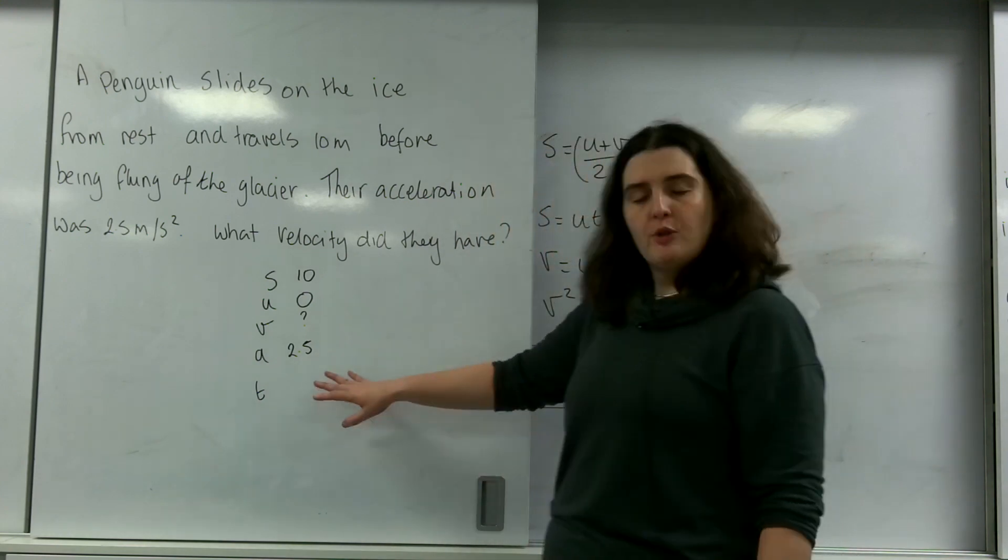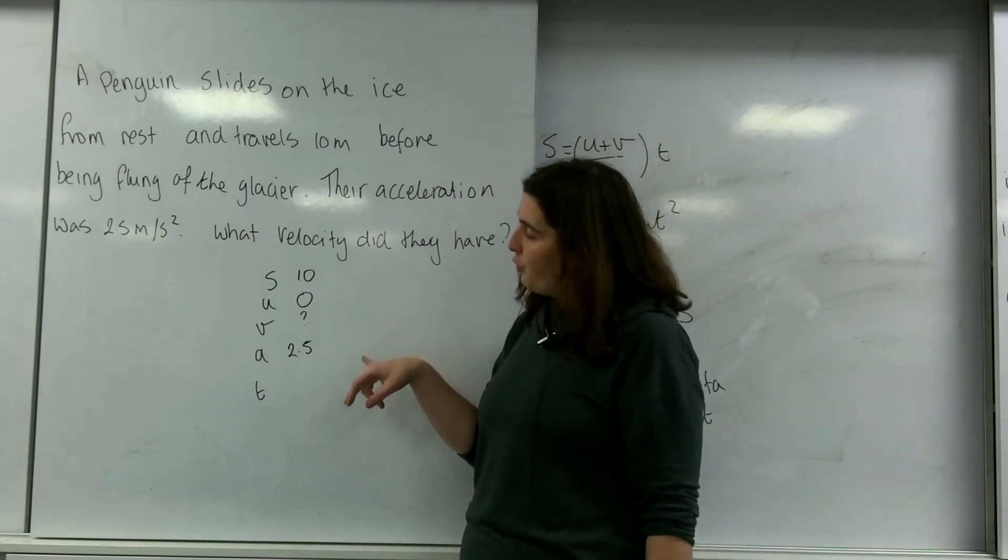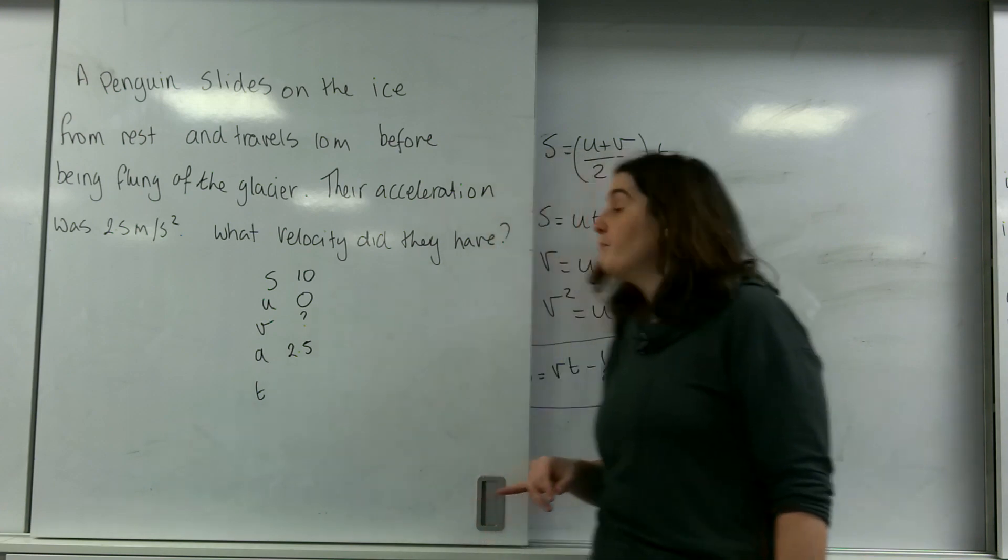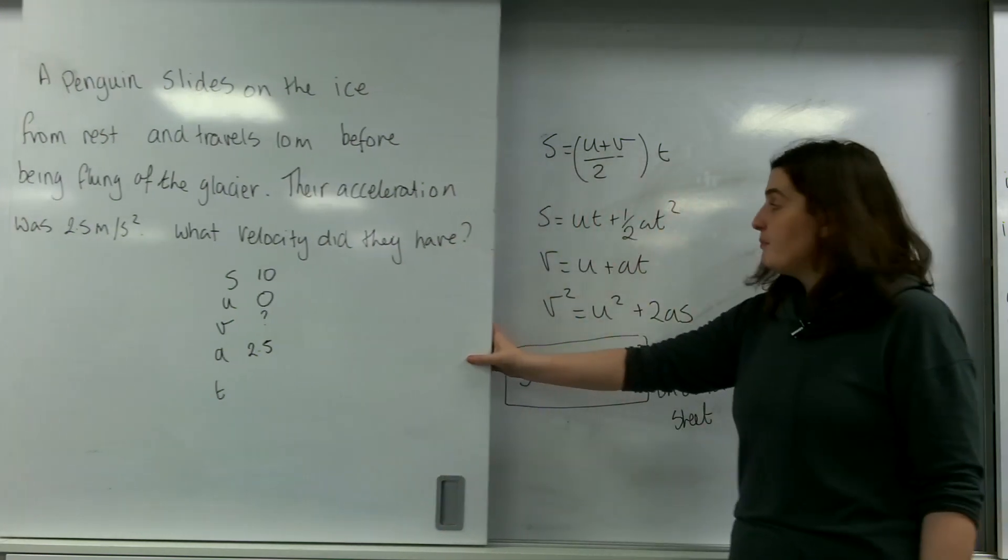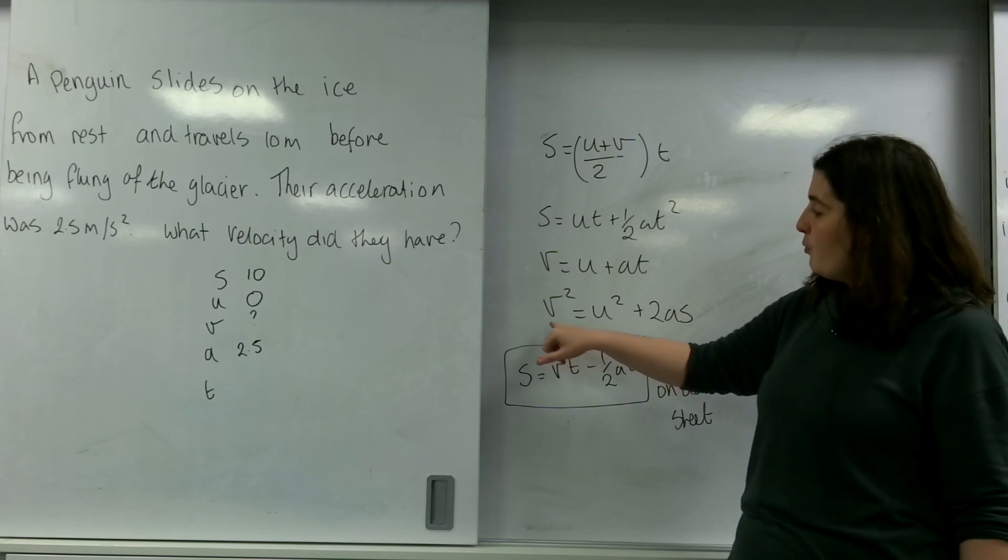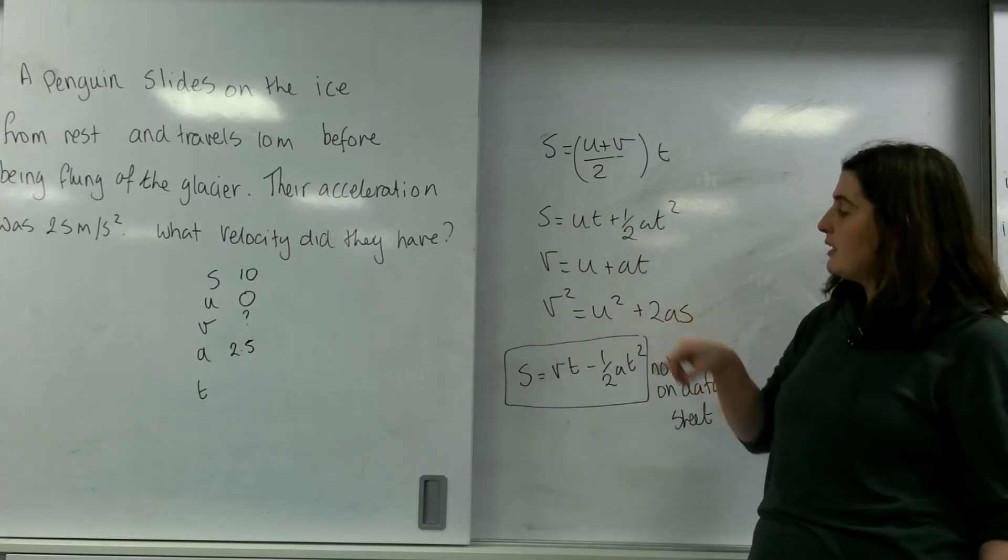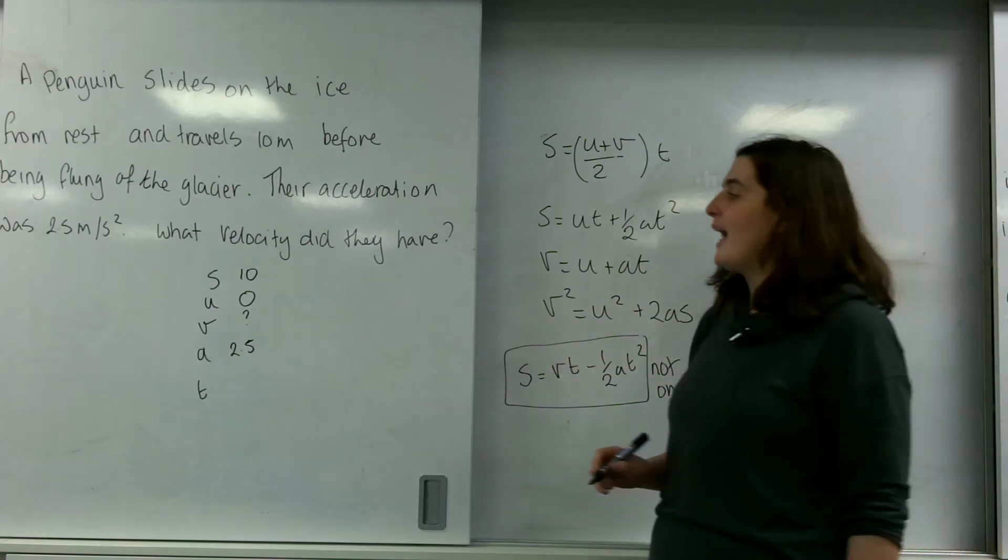Now, I don't know T at all. I need a formula that doesn't have T. So I'll go to my data sheet and have a look. And only one formula doesn't have T, and it's this one here: V squared equals U squared plus 2AS.